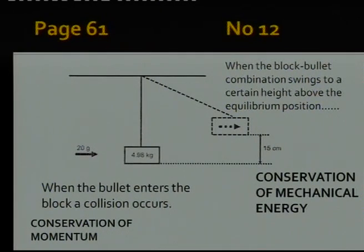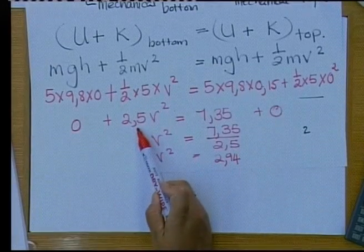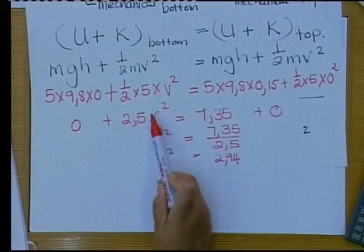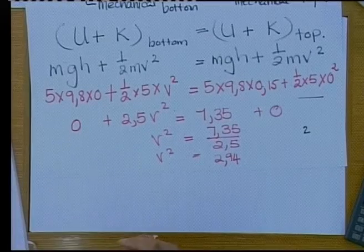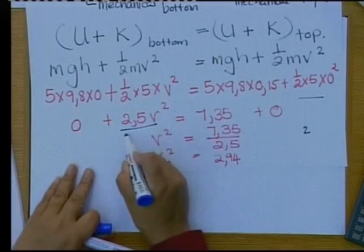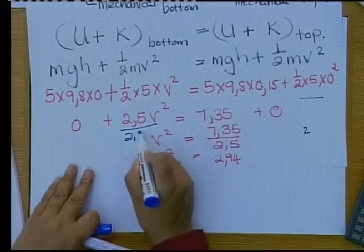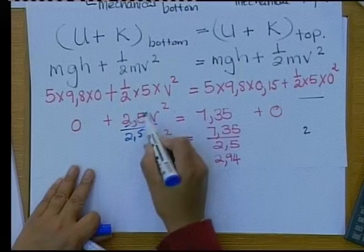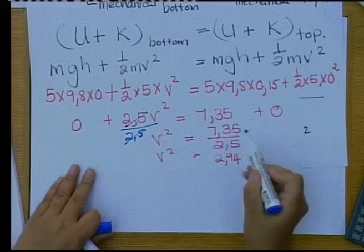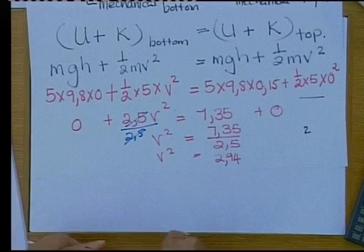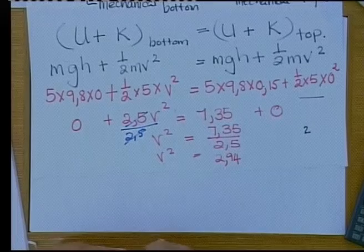Remember, you want to get rid of the 2.5 on the left-hand side. To do that, you divide by 2.5. If you divide the left-hand side by 2.5 — which cancels it — you also have to divide the right-hand side by 2.5.